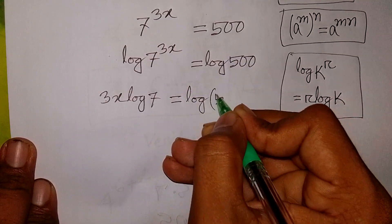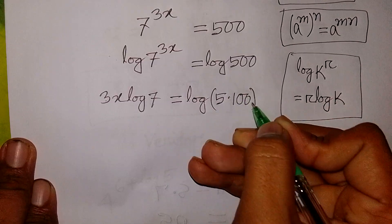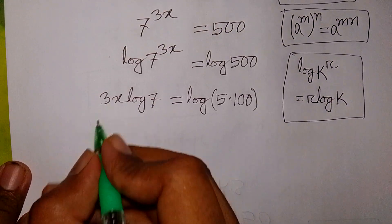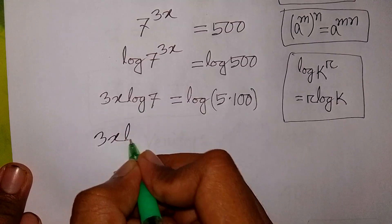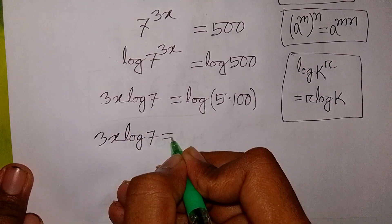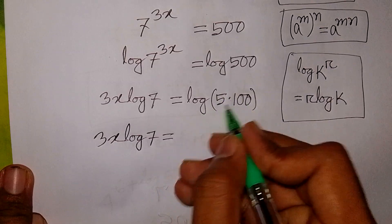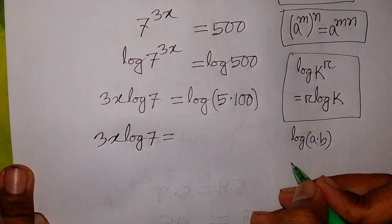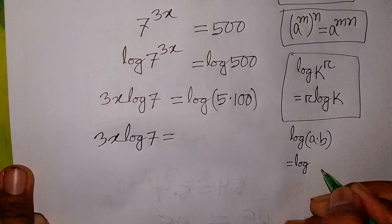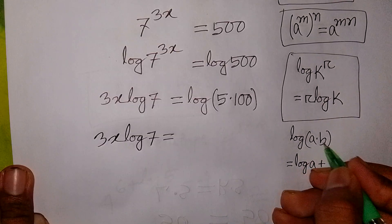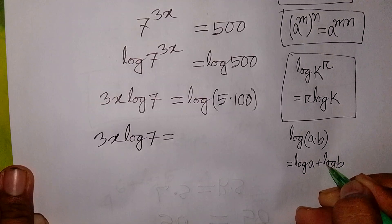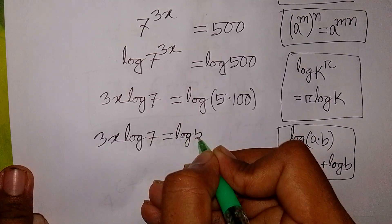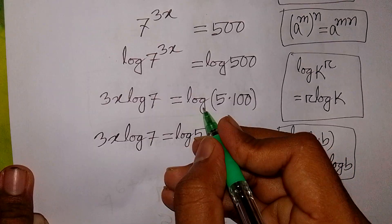The right side becomes log of 5 times 100. We have 3x·log 7 is equal to log of 5 times 100. We apply the formula log of a times b is equal to log a plus log b. So it will be log 5 plus log 100.